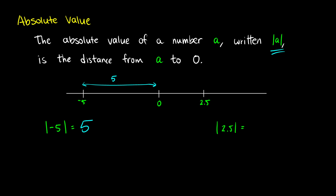If we look at the absolute value of 2.5, we're asking how many units away from zero is 2.5. This happens to be 2.5 units away, so the absolute value of 2.5 is equal to 2.5.